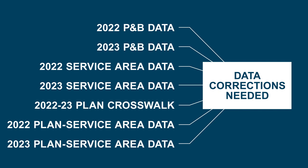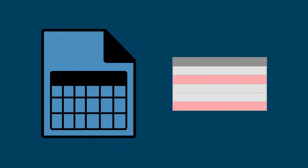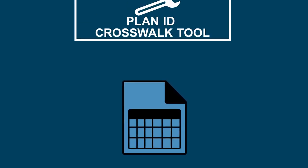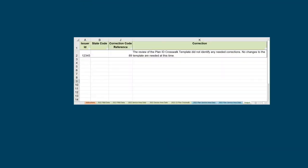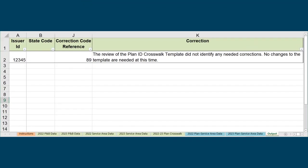Once you've determined the corrections you need to make, open the appropriate templates, correct, save and validate them, and reimport them into your PlanID Crosswalk tool. Repeat the review process until all plans pass the review, indicated by a message on the Output tab that states there are no corrections identified in your data.